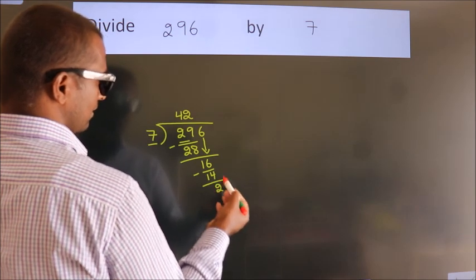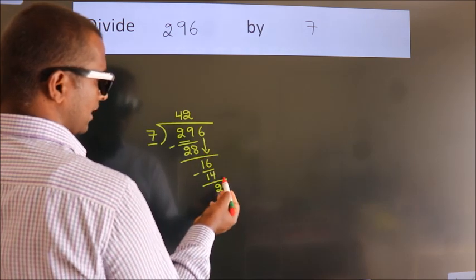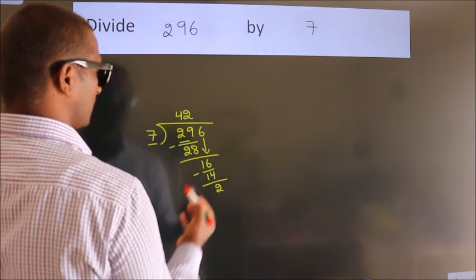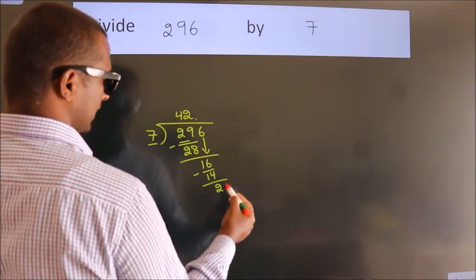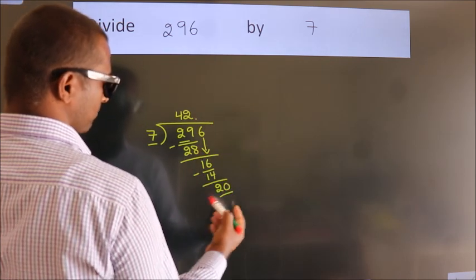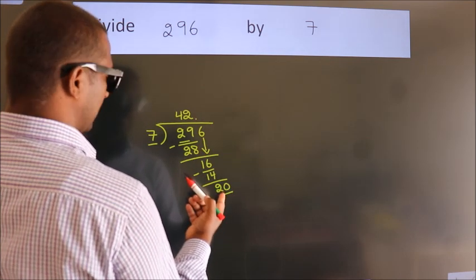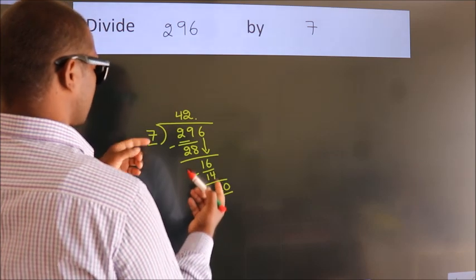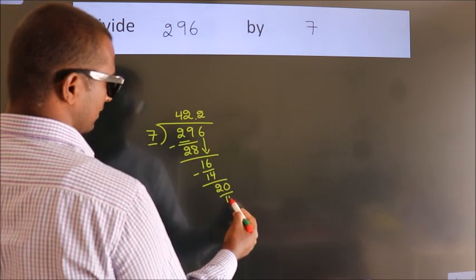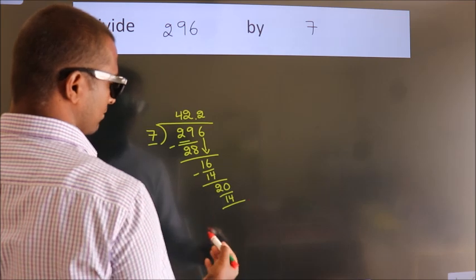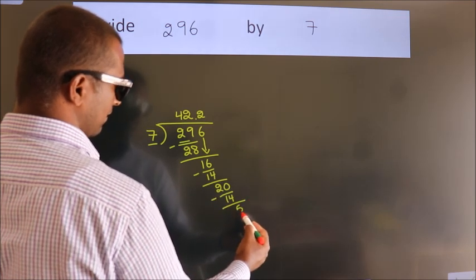After this, no more numbers to bring it down. So what we do is, we put dot take 0. So 20. A number close to 20 in the 7 table is 7 twos, 14. Now we subtract. We get 5.